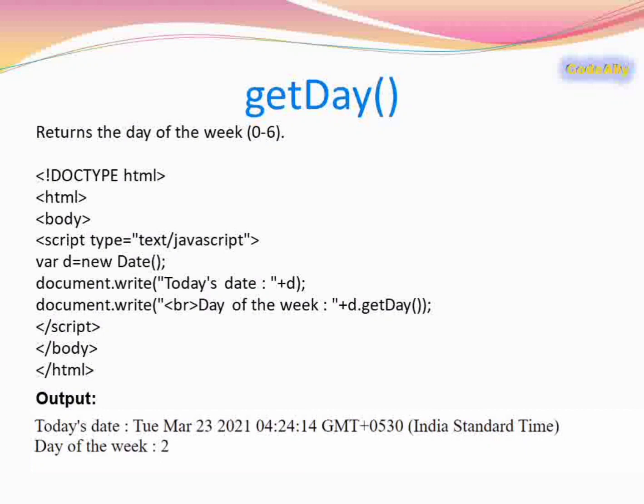The next method is getDay(), which gives the day of the week as a value in the range 0 to 6. Sunday returns 0, Monday returns 1, Tuesday returns 2, and so on. We have taken the current date and applied the getDay() method. We get the value 2 because the current day is Tuesday.